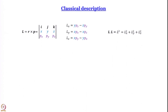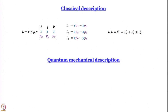This is the classical description. Now let us build the quantum mechanical description. As you know, we start from the classical definition and replace every observable with the corresponding operator. We replace x with the position operator x̂ — which is just multiplication by x — and replace px with the momentum operator p̂x.